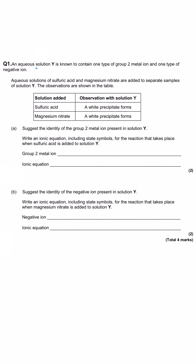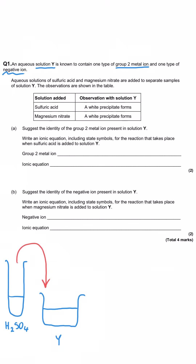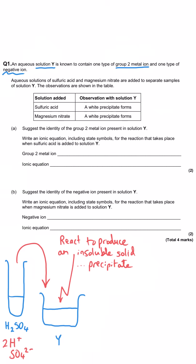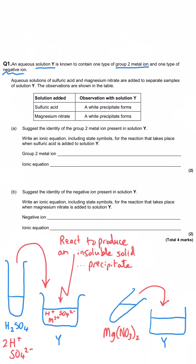In this first question we're told that there is a solution Y that contains a group 2 metal ion and a negative ion. It is reacted with sulfuric acid making a white precipitate, and also reacted with magnesium nitrate making a white precipitate. The sulfuric acid contains sulfate ions, and the magnesium nitrate contains magnesium ions — each reacting with the unknown ion from solution Y to produce the precipitate.